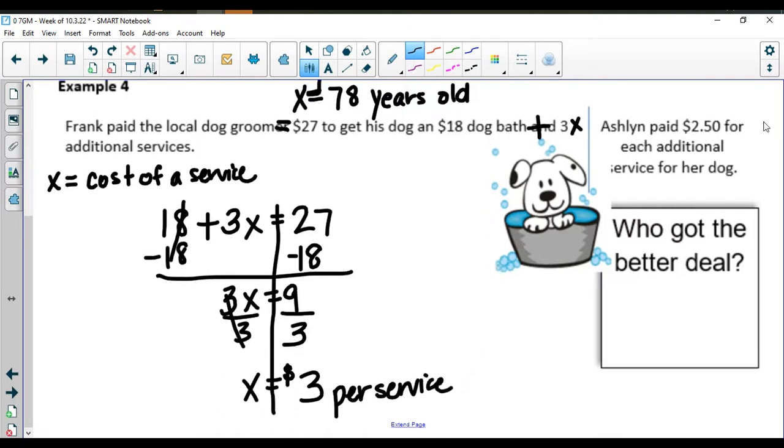Now in comparison to that, Ashlyn took her puppy someplace else and she paid $2.50 for each additional service for her dog. So who got the better deal? Frank who paid $3 per service or Ashlyn who only paid $2.50? Ashlyn's got the better deal because she had the cheaper services for her dog.